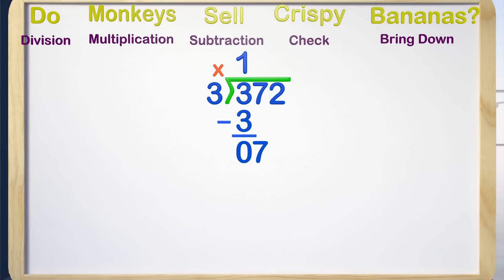With the 7 down here, we start all of our steps again. Does 3 go into 7, and if so, how many times? 3 goes into 7 two times. We write a 2 up above for the answer. We multiply 3 by 2 and get 6. We write the 6 below and move on to the next step. The next step is subtraction. 7 subtract 6 gives us 1.